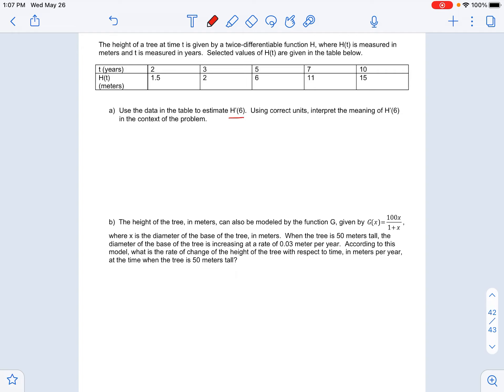Now the first question asks us to find the best estimate for h prime. So I want the best estimate for the slope at 6. I want to use the two time periods that are closest, so I'm going to use these points. So the best estimate for h prime of 6 is going to be h of 7 minus h of 5 over 7 minus 5. This is just slope. So this is 11 minus 6 over 2, which is 5 over 2. And then your unit should be meters per year.